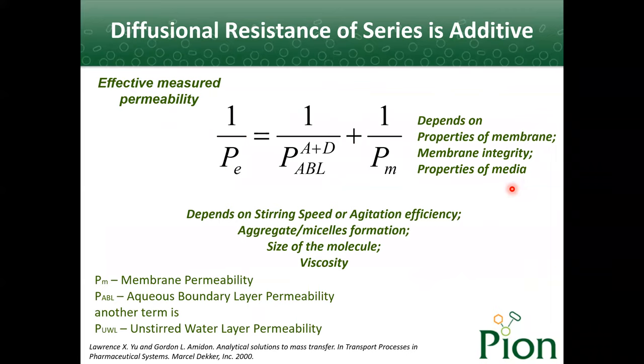Traditionally, permeability was considered constant regardless of formulations used. However, the effective permeability actually depends on both aqueous boundary layer permeability and membrane permeability. The reciprocal of effective permeability equals the addition of the reciprocal of aqueous boundary layer permeability and membrane permeability. The membrane permeability depends on the property of the membranes, and the aqueous boundary layer permeability depends on the agitation efficiency and the size of the molecule.